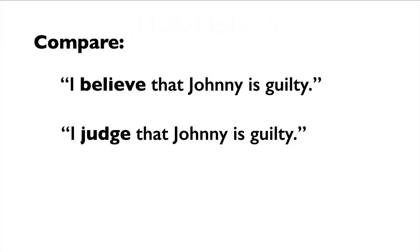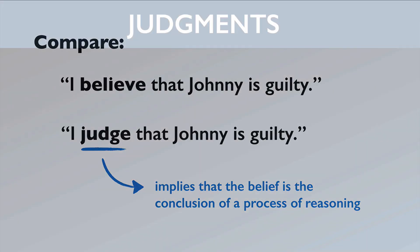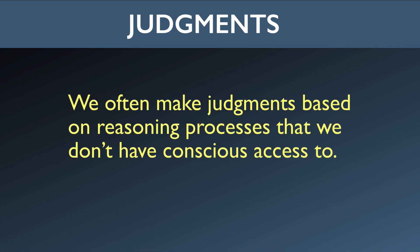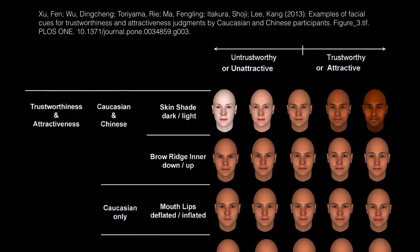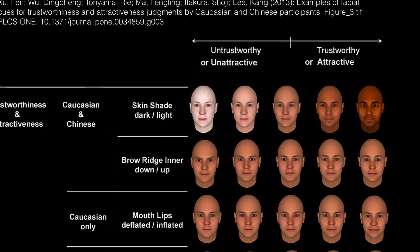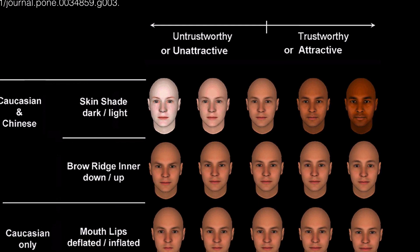I might believe that a certain person is guilty of a crime, but to say that I judge the person to be guilty is to imply that this belief is the conclusion of some process of reasoning. Now we don't want to restrict judgments to conscious deliberative reasoning processes, because that excludes most of the ordinary cognitive processing that is actually going on when we make decisions. We make judgments all the time based on reasoning processes that we don't have conscious access to. I might judge a person to be trustworthy and reliable based only on a brief exposure to them, because I'm subconsciously picking up on cues that our brains use to make quick judgments about such things. We're constantly making unconscious judgments like this — it's a fundamental feature of how human beings interact with the world.